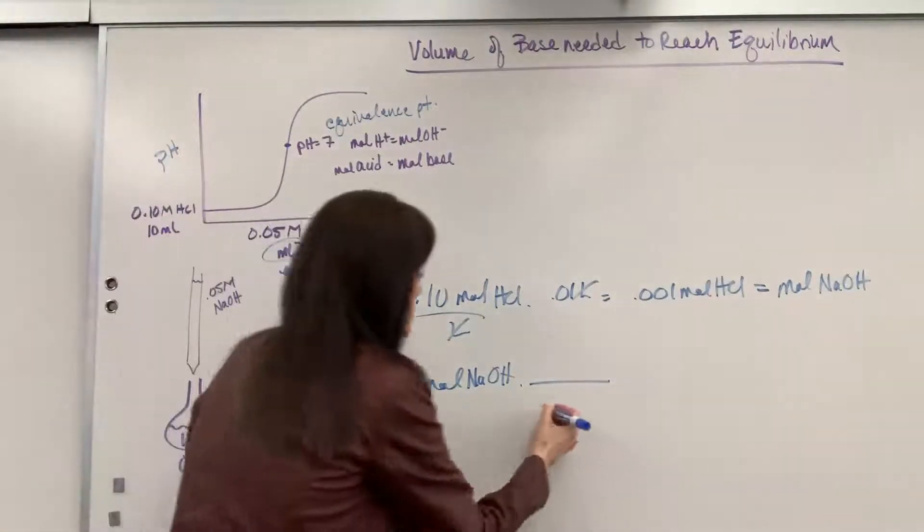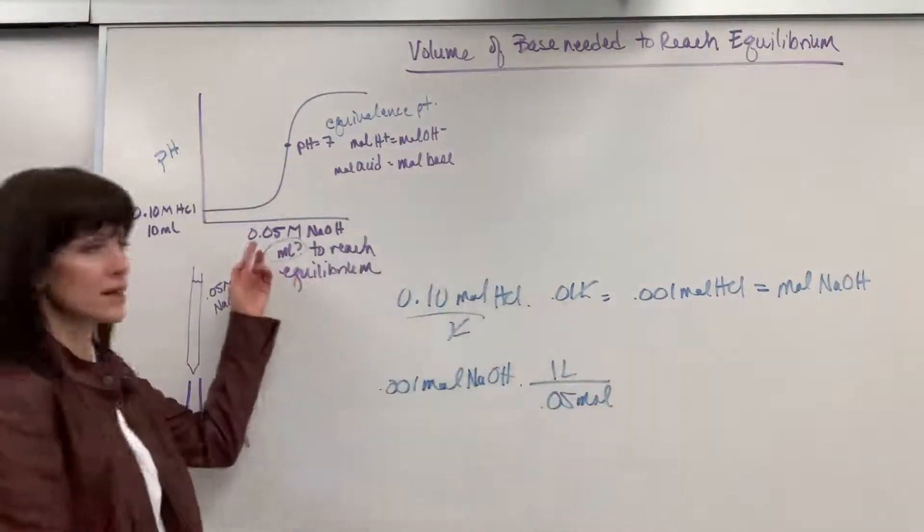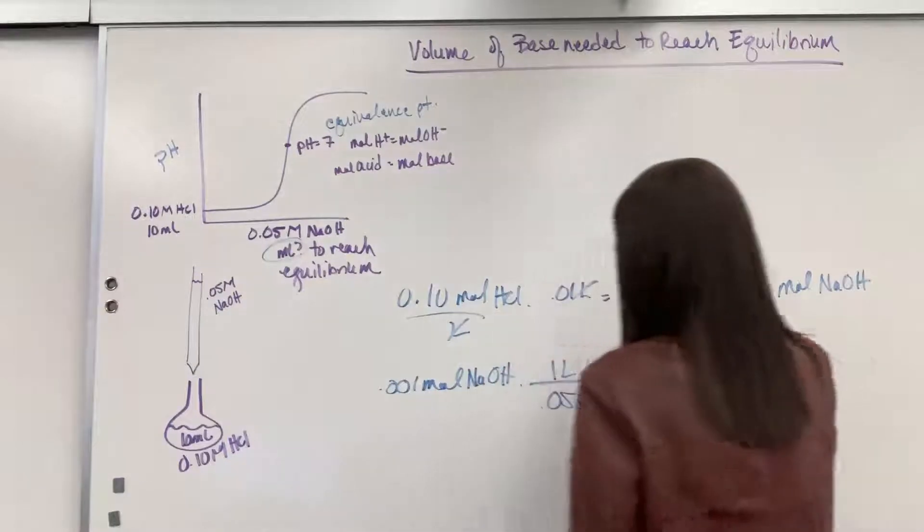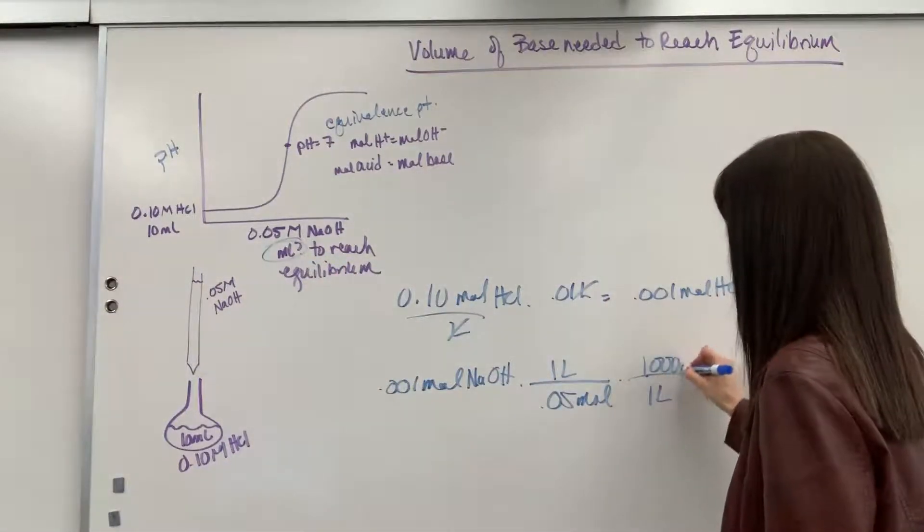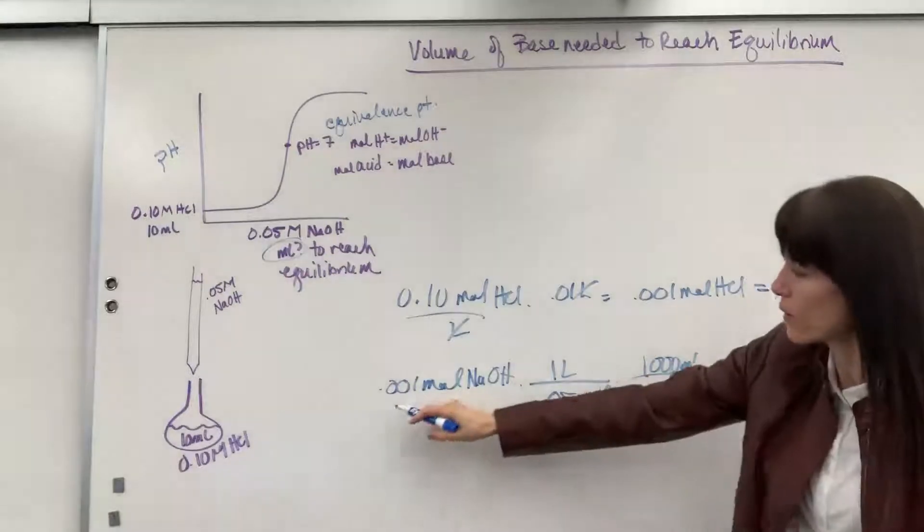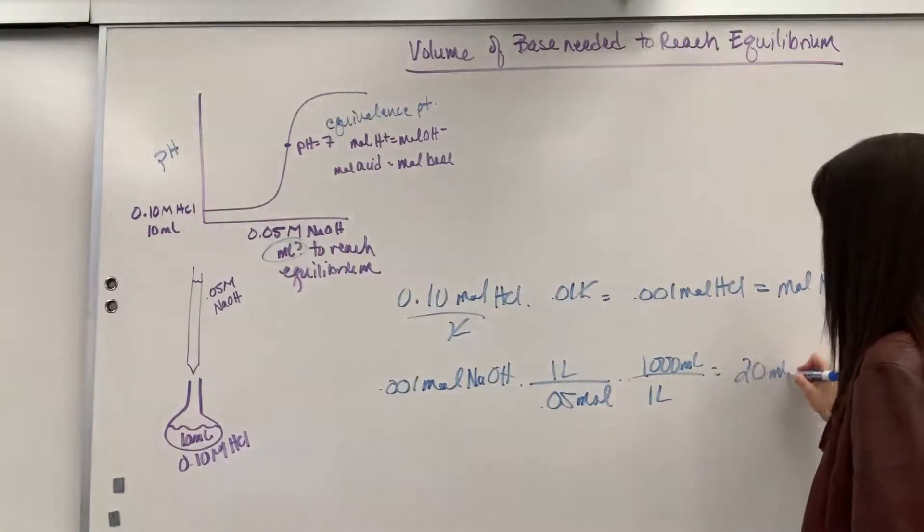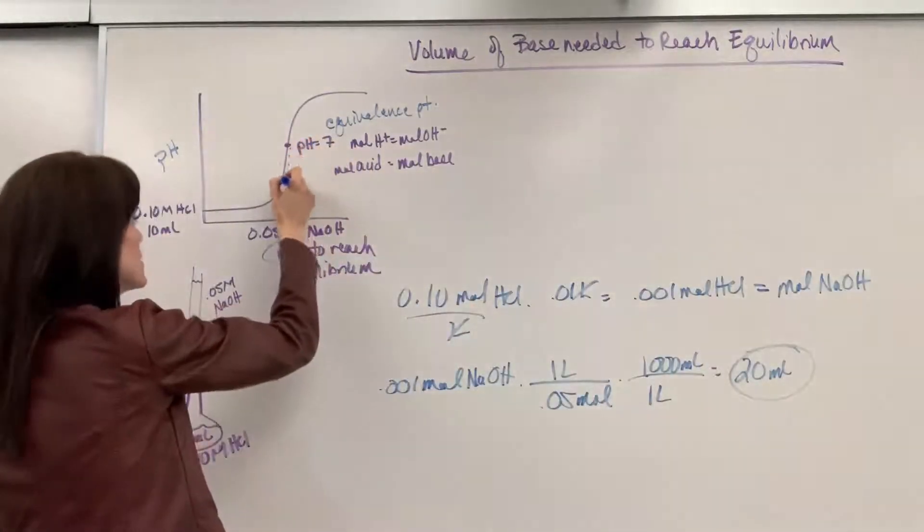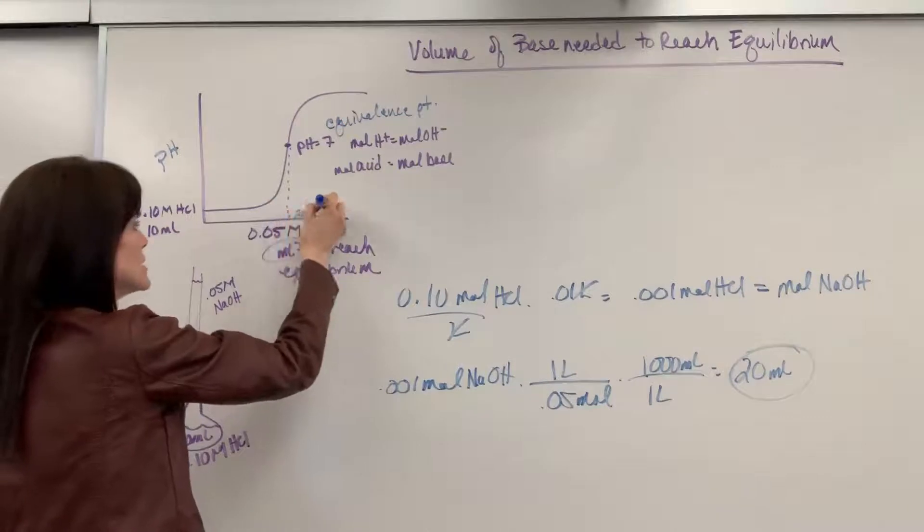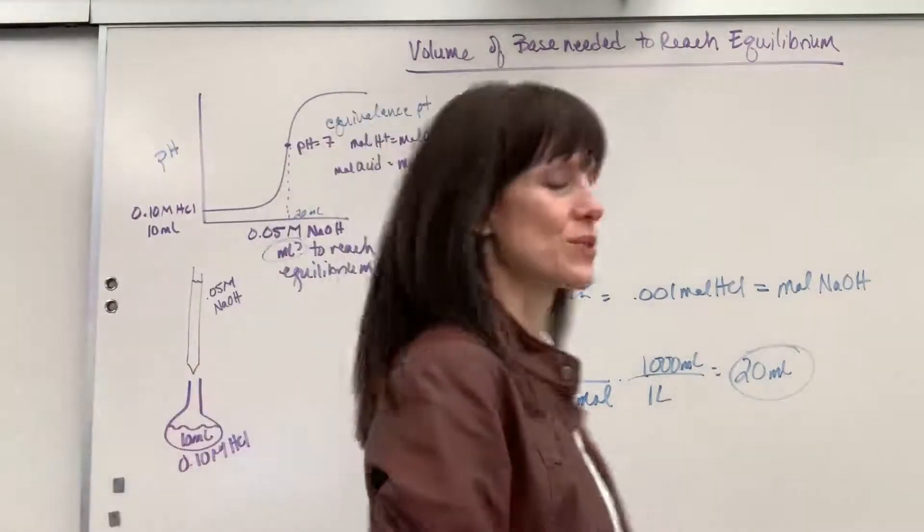And now I can take the molarity, 0.05 moles per 1 liter. Now, I want this in mils. We asked for mils. So 1 liter has 1,000 mils. When we do that math, 0.001 divided by 0.05 times 1,000, 20 mils. So that tells me, right here at this point, we will deliver 20 mils. There will be 20 mils that we add to that. Kind of cool.